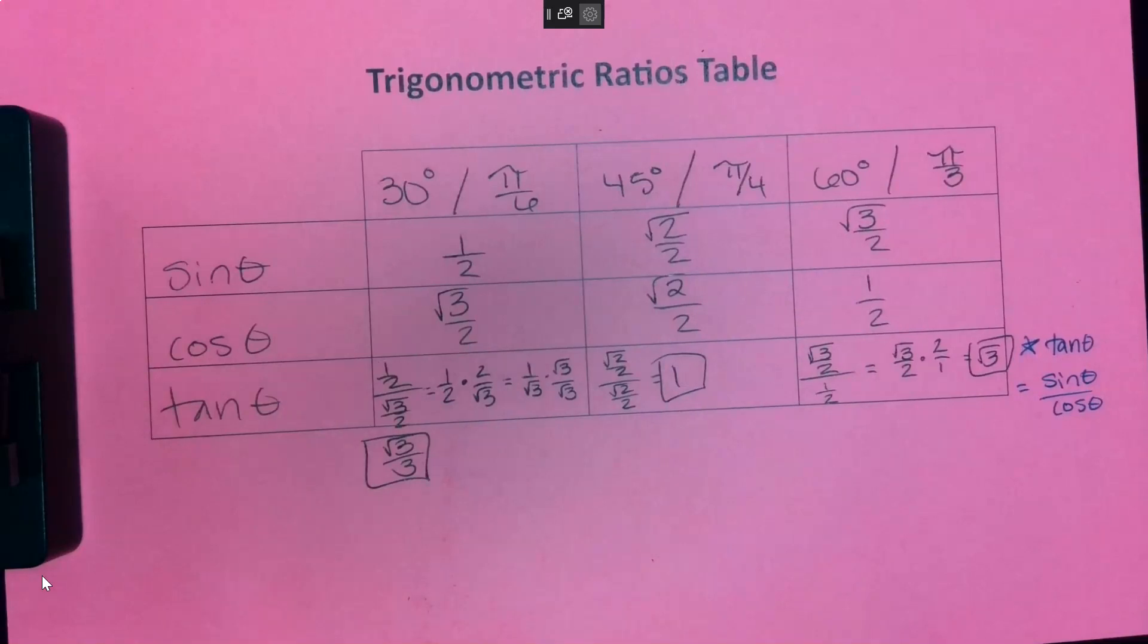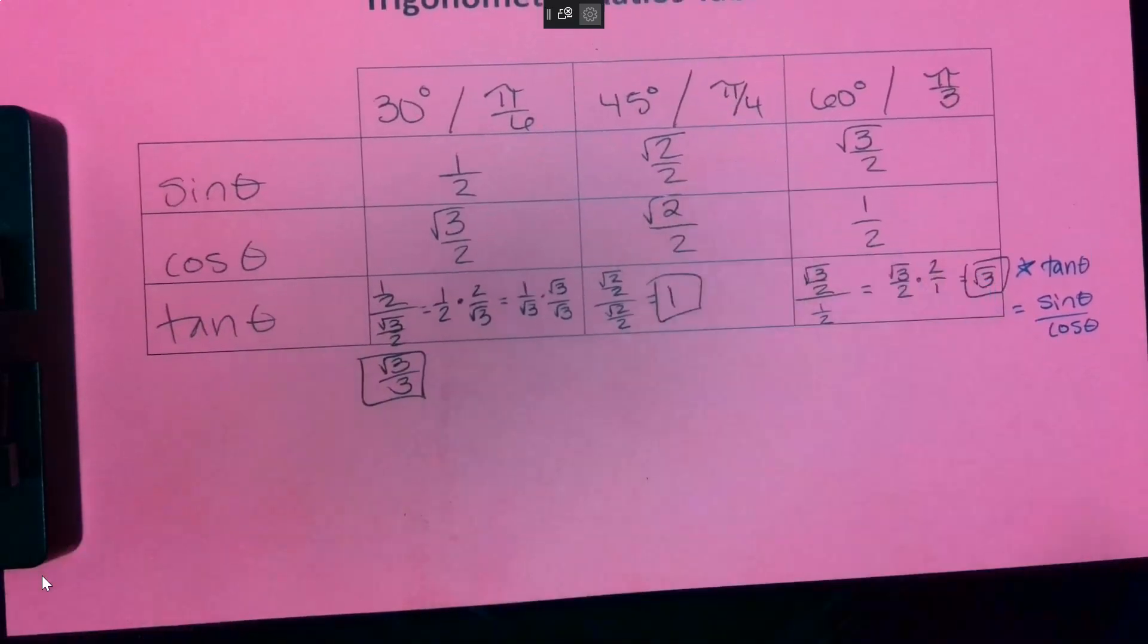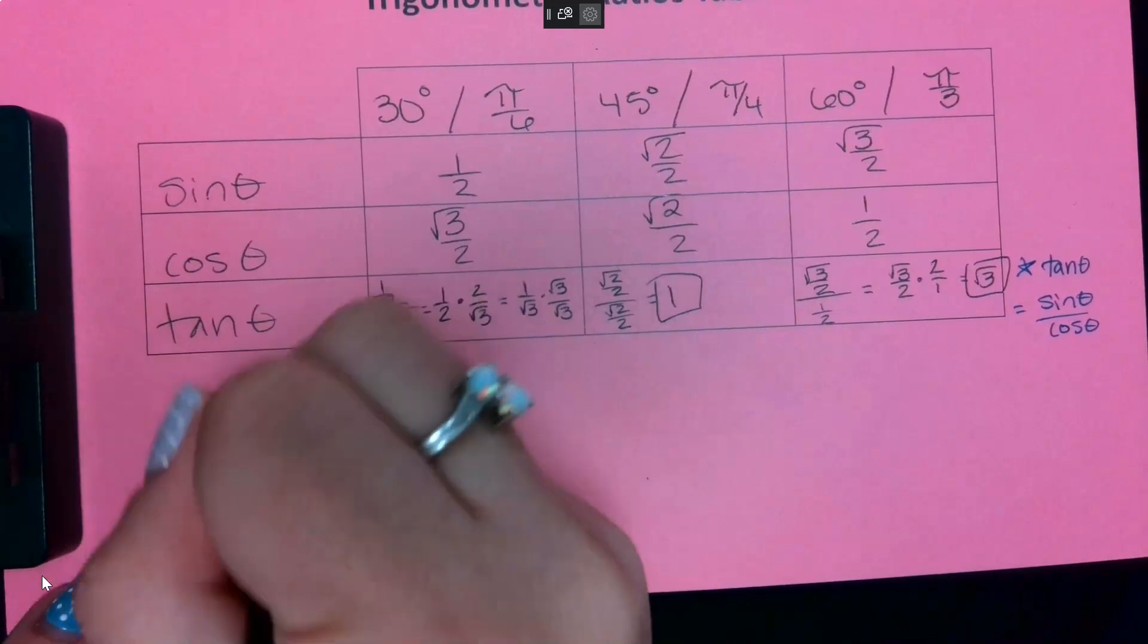So this chart gets me the three common reference angles. Then I need to remember which quadrant each of these are positive in. So I have this.